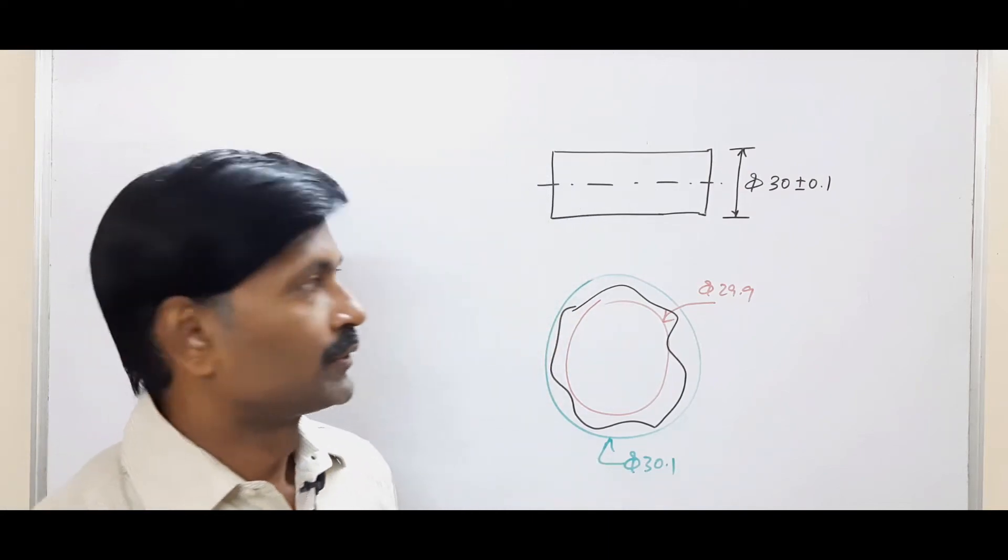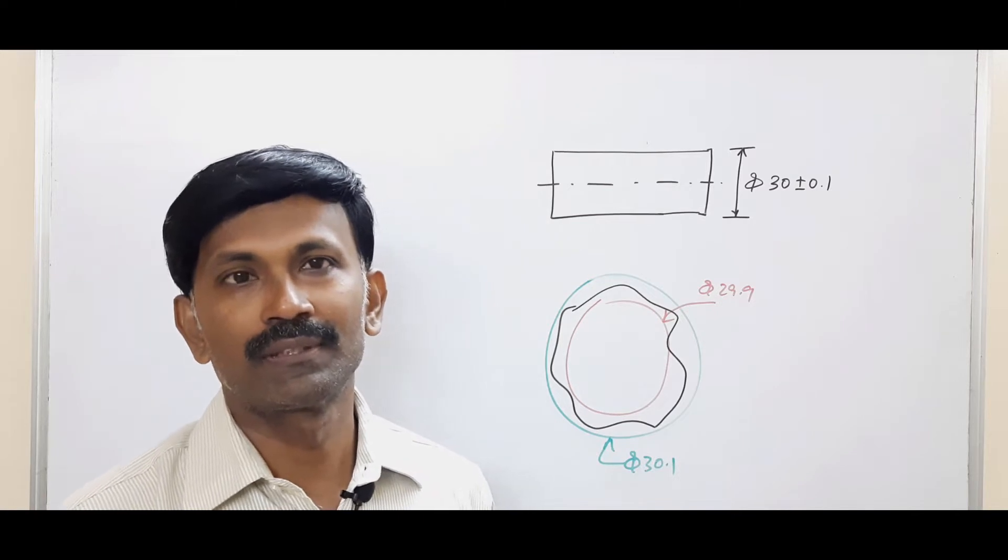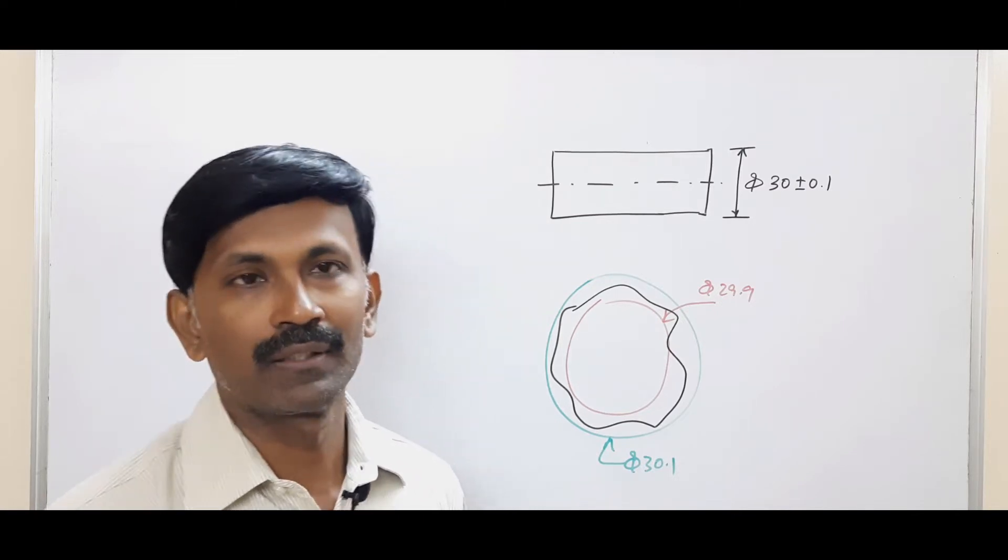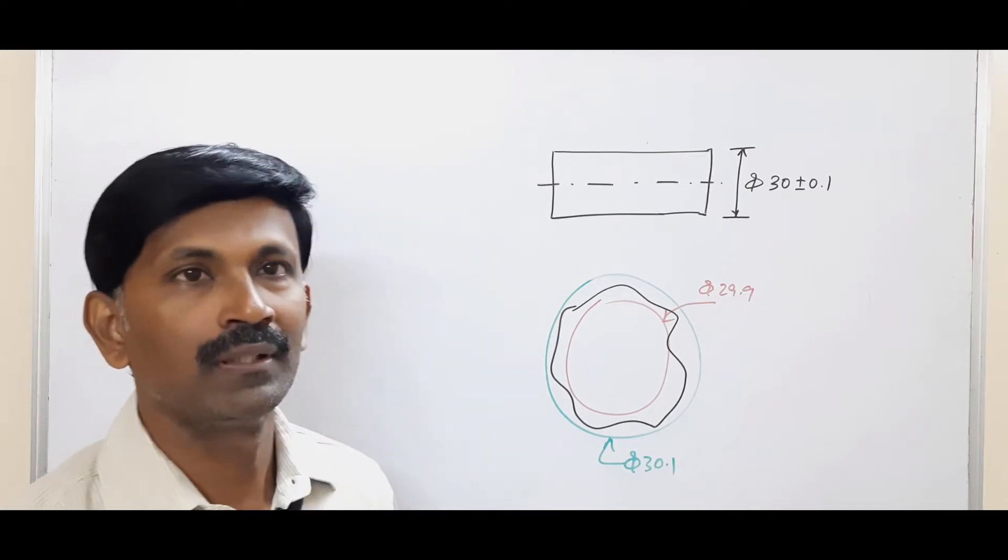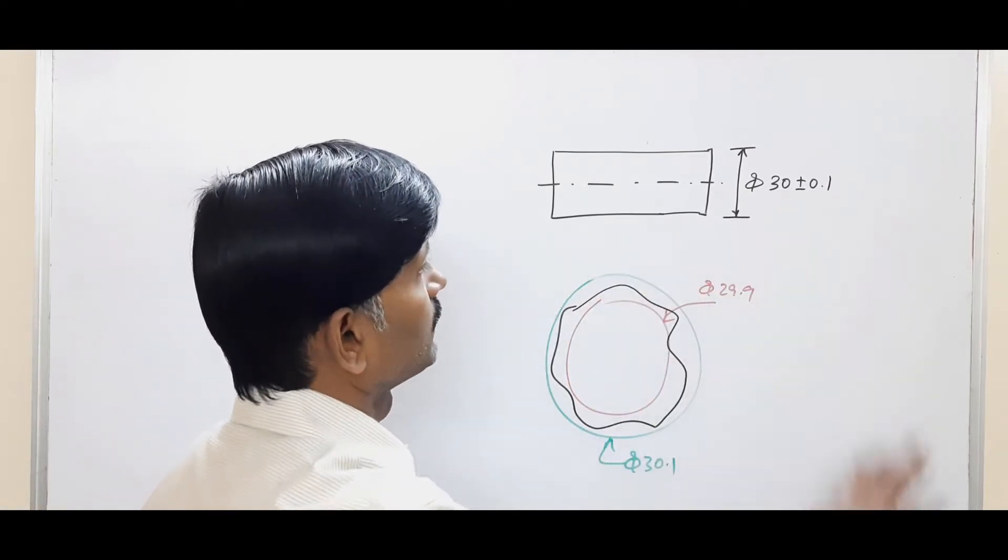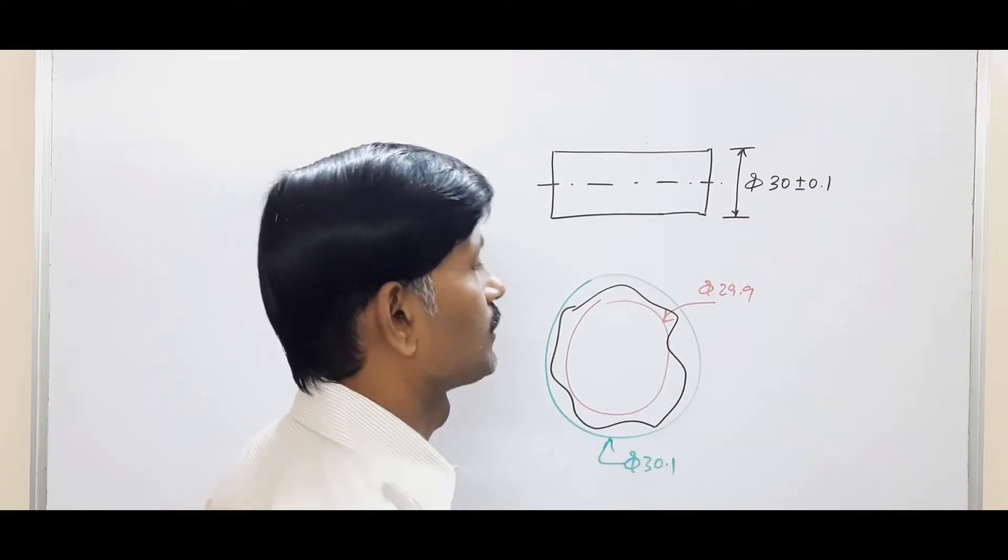Hello, today we will discuss the third geometrical tolerance, which is circularity. Circularity is part of form controls. As usual, here we take an example without a geometrical tolerance. We have only a dimension and a dimensional tolerance.